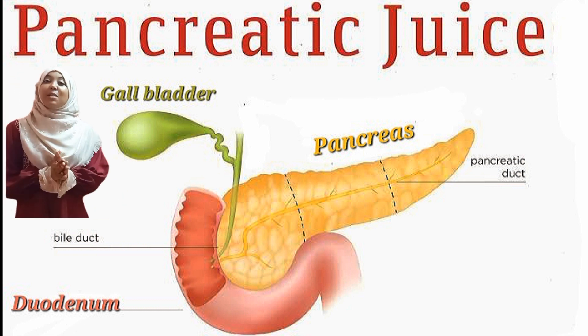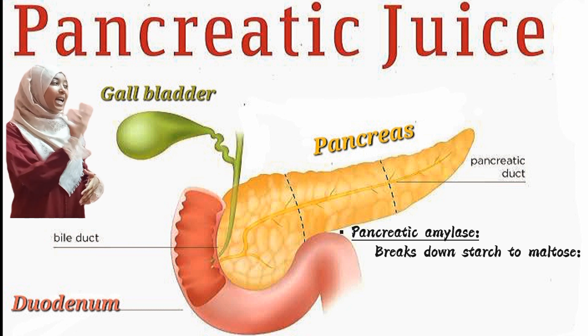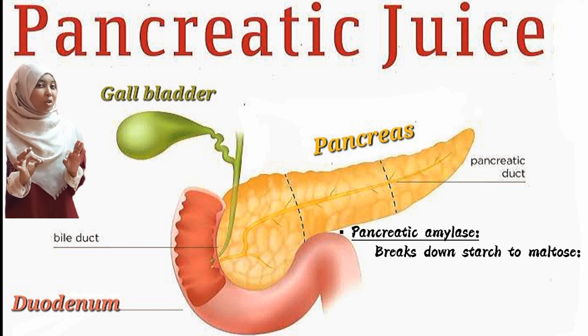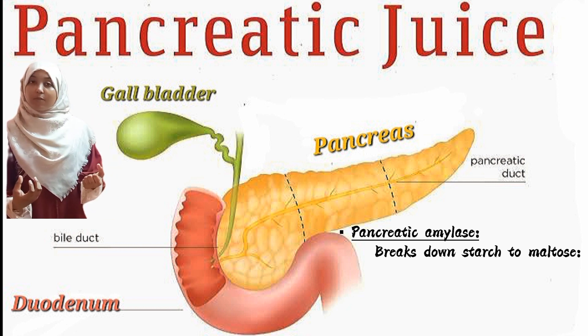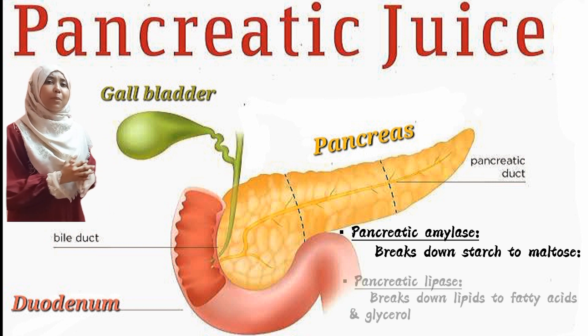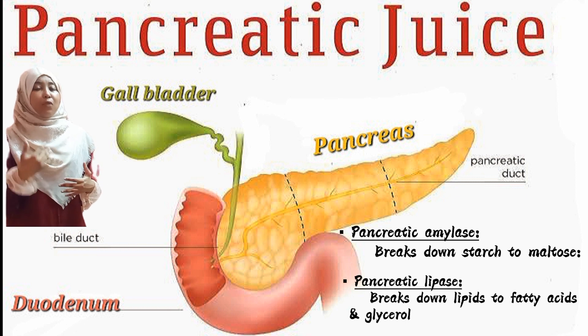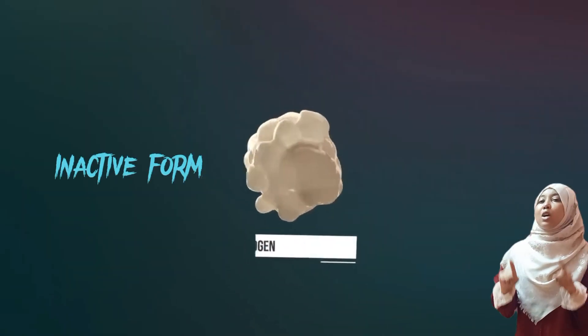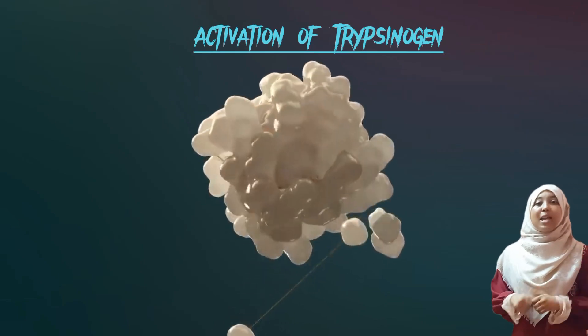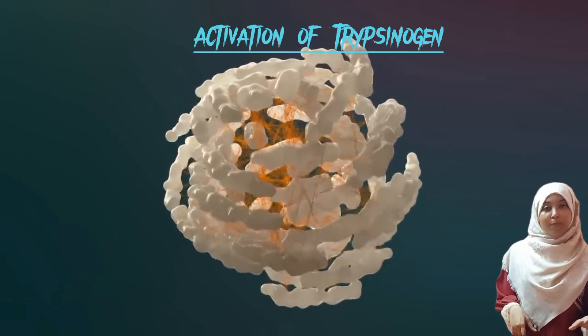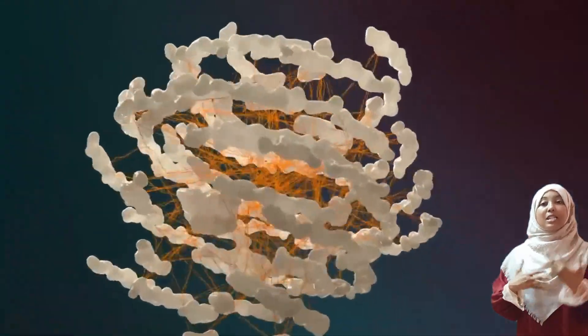The pancreatic enzymes are as follows: pancreatic amylase breaks down starch to maltose; pancreatic lipase breaks down lipids to fatty acids and glycerol; and trypsin breaks down proteins. Just like pepsin and rennin, trypsin is produced in an inactive form called trypsinogen for the same reason, and is then activated before acting on proteins.